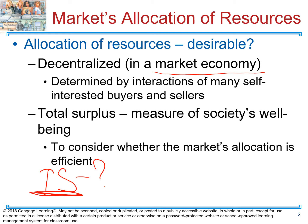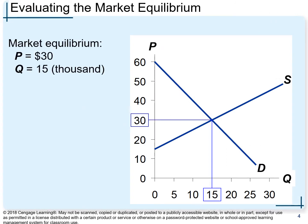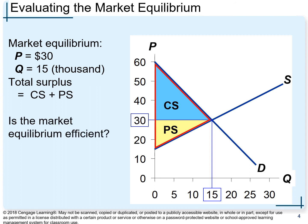The answer is: in a market economy, total surplus is maximized by bringing the highest value to buyers and the highest value to sellers. This means efficient allocation of resources — where goods are consumed by the buyers who value them the most, and goods are produced by sellers who can produce them at the lowest cost of production. Let's see how that looks on our graph.